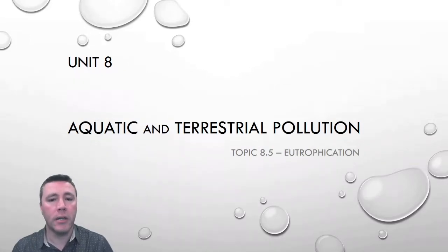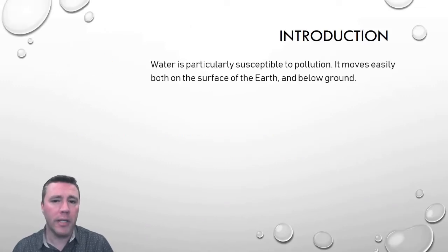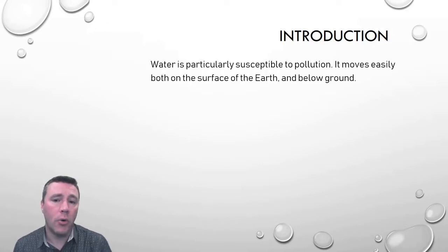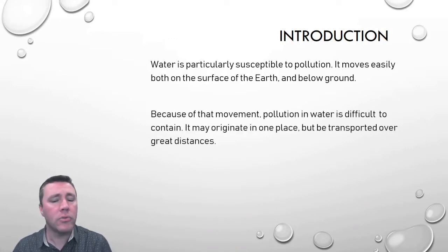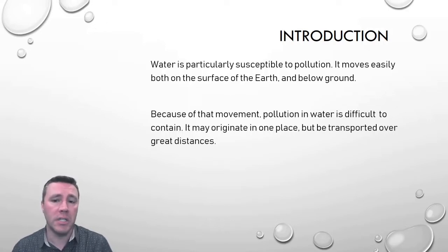In this video, we're going to be taking a look at topic 8.5, Eutrophication. Water is particularly susceptible to pollution. Like air, it moves around easily — water moves underground and flows on Earth's surface. That means that any pollutants in the water move around just as easily, and it's very difficult for us to contain those pollutants because they're being transported over such great distances.